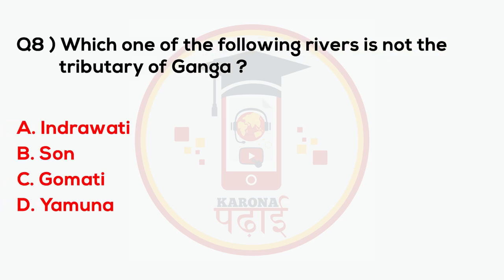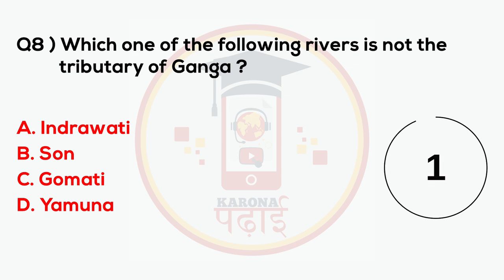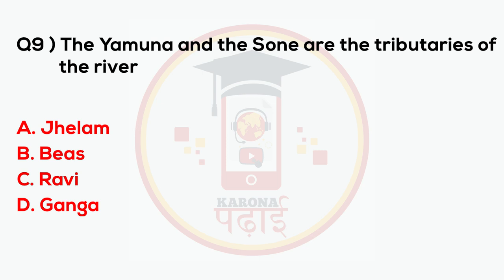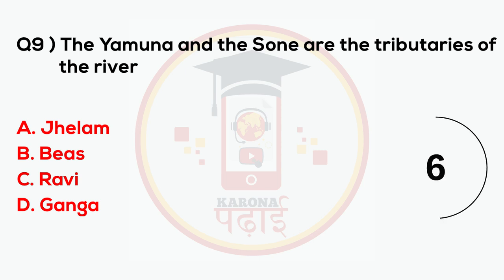Which of the following rivers is a non-tributary of the Ganga? Indiravati. The Yamuna and the Sone are the tributaries of the river Ganga.